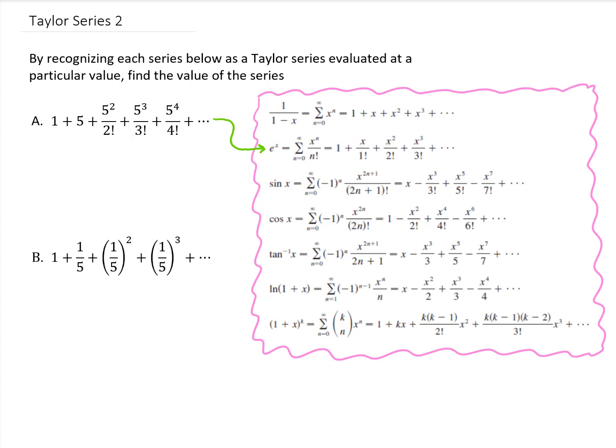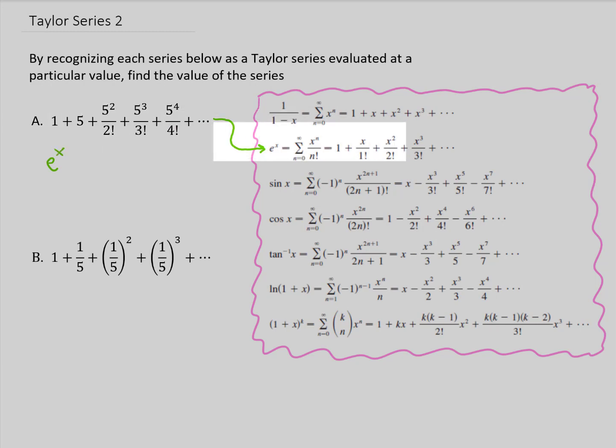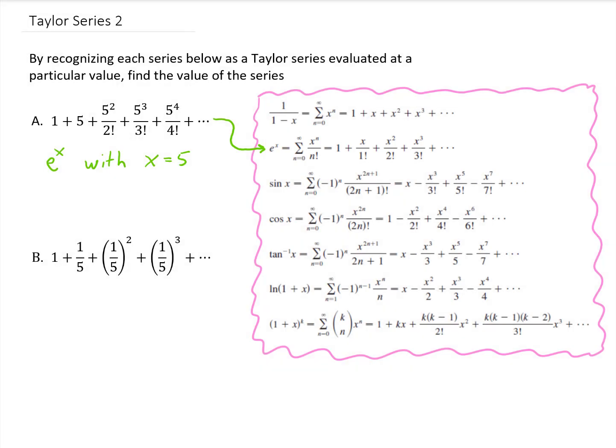So we notice that this given series is just a series for e to the x, except instead of x we're using 5. So the answer to this particular problem is going to be e to the fifth power. We just replace x with a 5, and that's the series that we get.